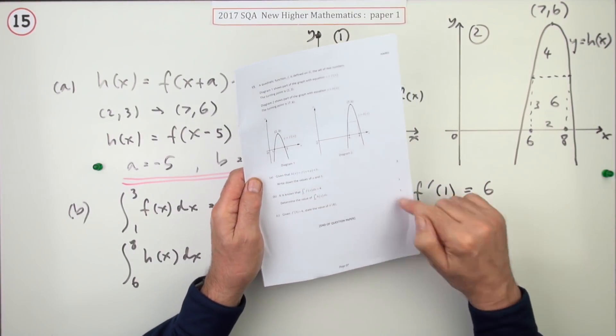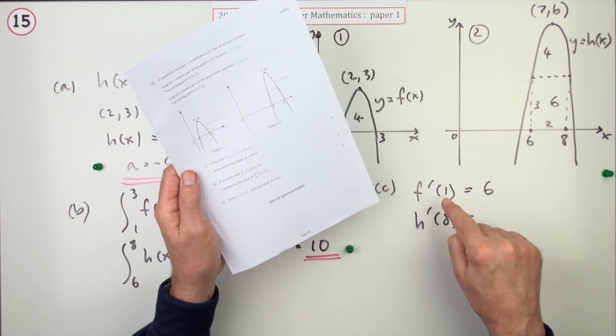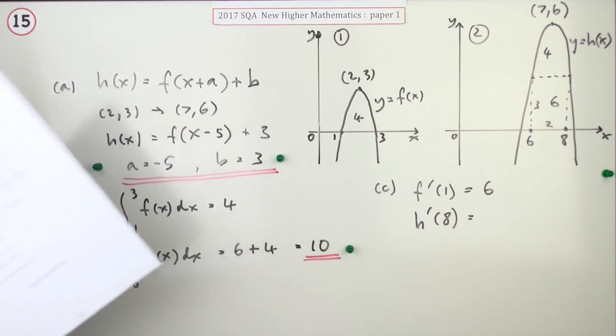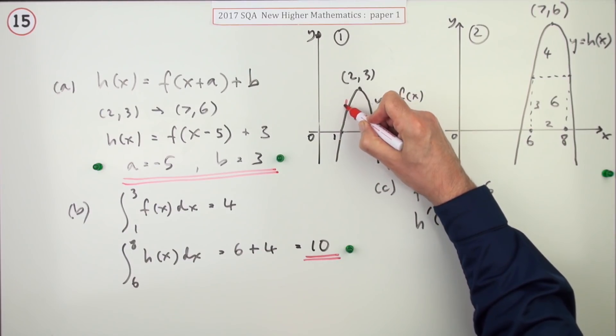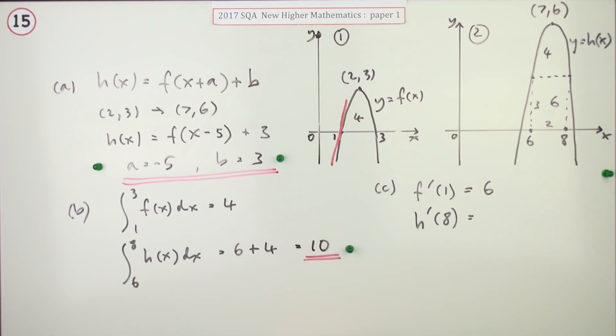And c, final mark, given that f dashed of 1 is 6, what's h dashed of 8? Well, f dashed 1 means the rate of change or in terms of the graph, the gradient of the graph at 1. In other words, this gradient here is 6. It's a gradient of 6.